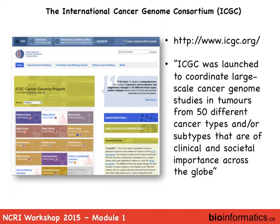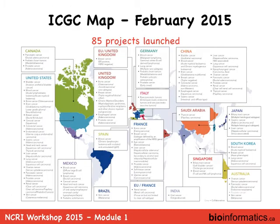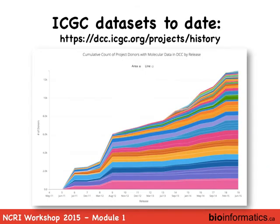ICGC — at icgc.org — is an international project aiming to collect 25,000 tumors from 50 different tumor types, so 500 tumors per tumor type, which is 50,000 genomes. It's a ten-year project; we're currently in year seven. We've accumulated about half the data so far — the curve of data accumulation was slow at the beginning and gets faster as the project progresses.